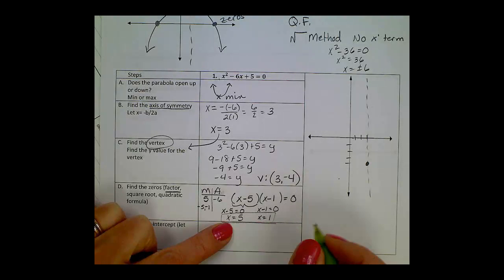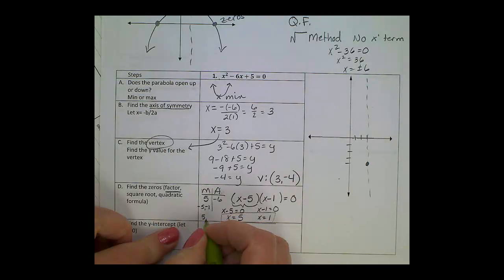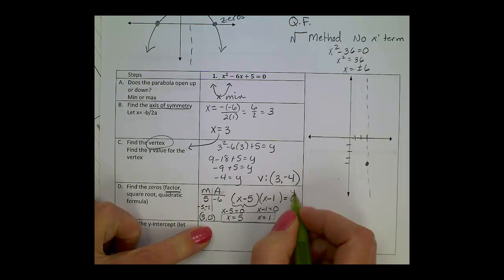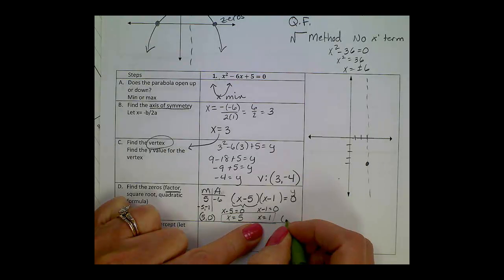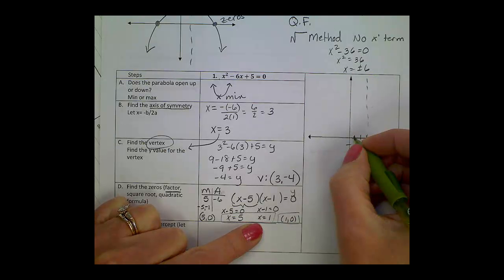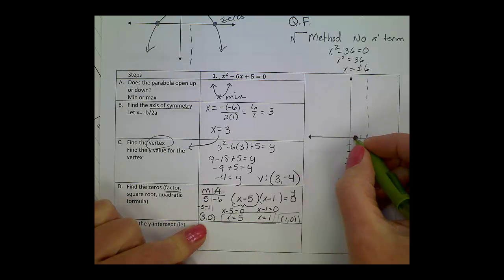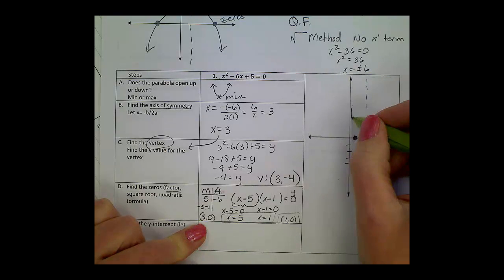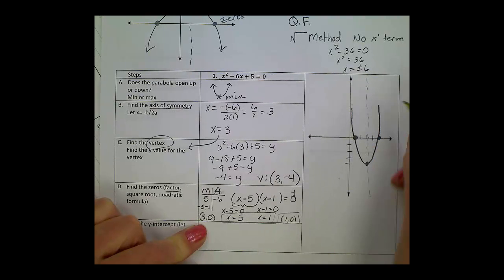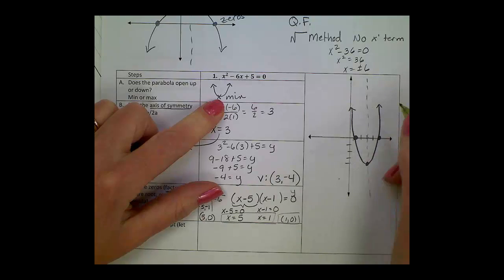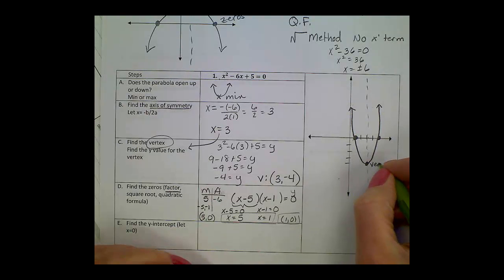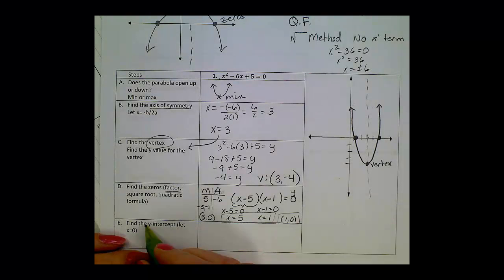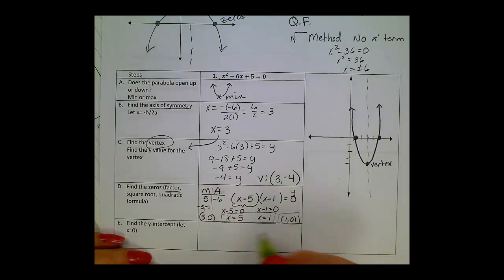Ordered pairs for these would just be 5 comma 0, because y was 0, we set our equation equal to 0, and 1 comma 0. So, graphing those, I have an x intercept or a 0 here at 1, and I have another one at 5. 1, 2, 3, 4, 5. Now, notice again, these points are symmetrical to that axis of symmetry, and it helps us graph our parabola.